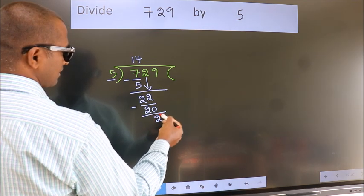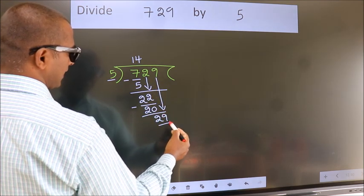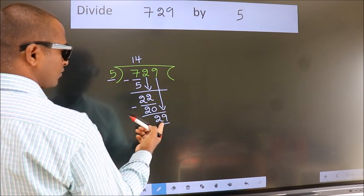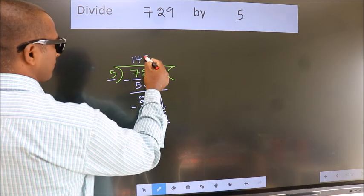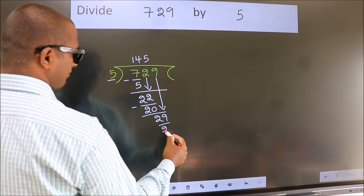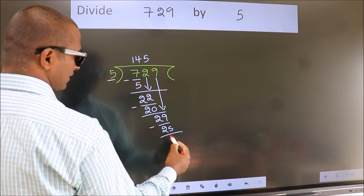After this, bring down the beside number. So, 9 down. So, 29. A number close to 29 in 5 table is 5 fives 25. Now, we subtract. We get 4.